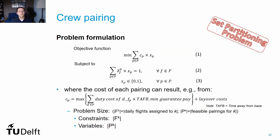The standard problem can be formulated as we see in this slide. The objective is to choose the pairings that minimize our costs, so our objective function is the minimization of the sum of the costs associated with each pairing. If we select one pairing P, the decision variable will be equal to 1 and the respective costs will be added in our objective function. In terms of constraints, we only have one set of constraints that force every single flight in the schedule to be covered once and only once — that's expression 2.